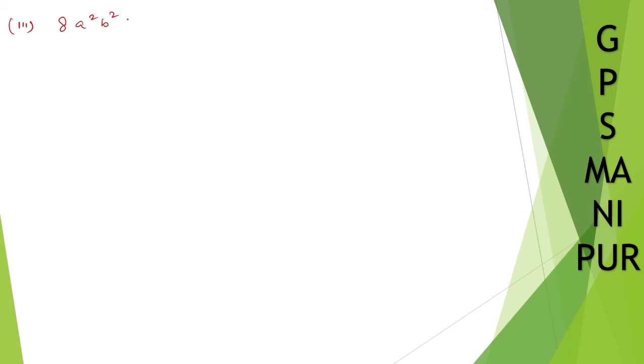Now we are doing exercise, question number two, roman number three. Let me write down the question: 8a²b²c³ and 12a³b⁴c². Solution: the first one is 8a²b²c³.